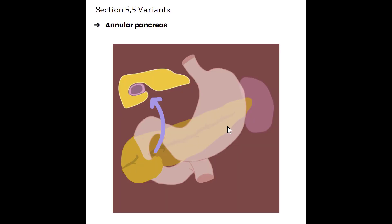Section 5.5, Variants. Just like with all of our other organs, sometimes the pancreas doesn't get put together quite right, so we do see some anatomical variants. The first one is called an annular pancreas — a condition in which a ring of pancreatic tissue surrounds the second portion of the C-loop of the duodenum.